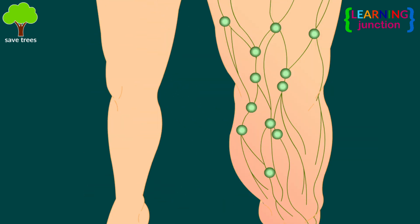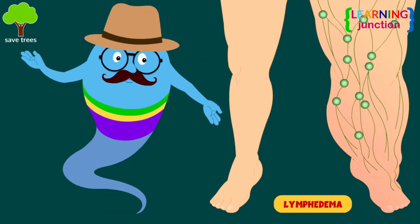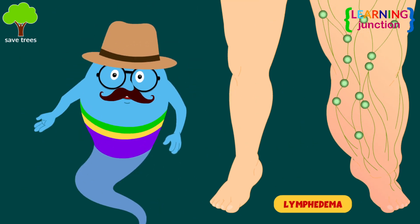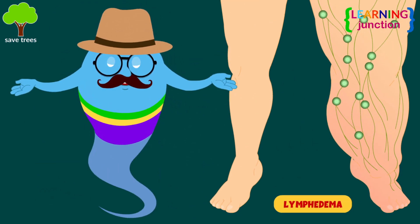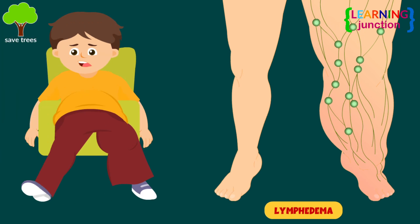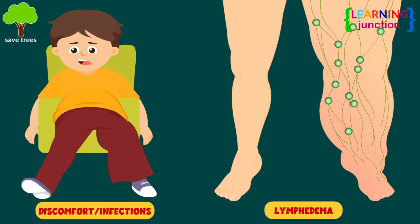When the fluid is not adequately drained, lymphedema occurs. It is the unusual swelling of the arms or legs, which can lead to severe discomfort and life-threatening infections.